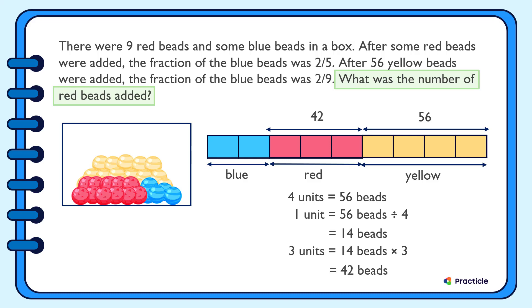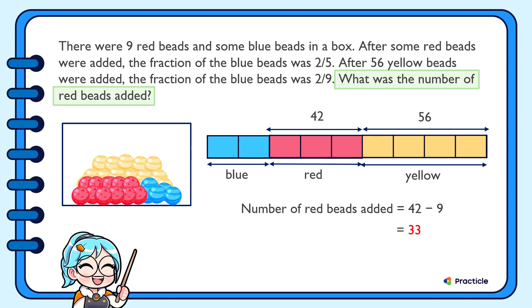Now that we know there were 42 red beads in the end, how can we find the number of red beads that was added? We know that there were 9 red beads at the start. Agree? So to find our answer, let's subtract 9 from 42. Did you get 33? If you did, great job! And this is our answer.